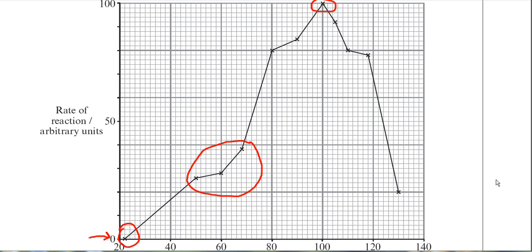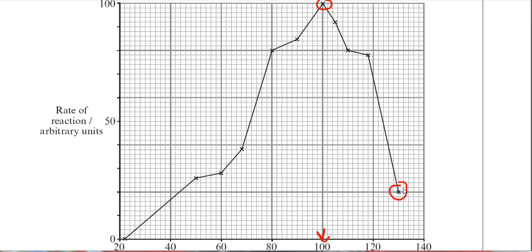What's best is to describe the general pattern of the graph: the rate of reaction increases for an increase in temperature. There's also another part to describe — what happens at a temperature above 100°C. When the temperature increases further to 130°C, the rate of reaction has dropped from 100 to 20.